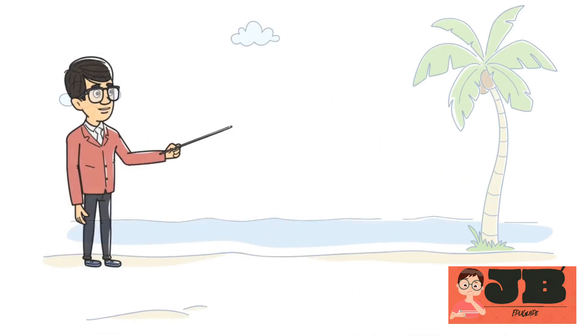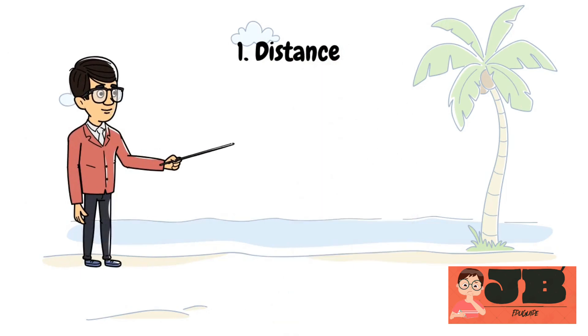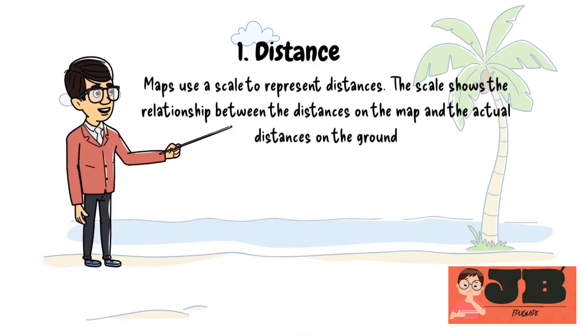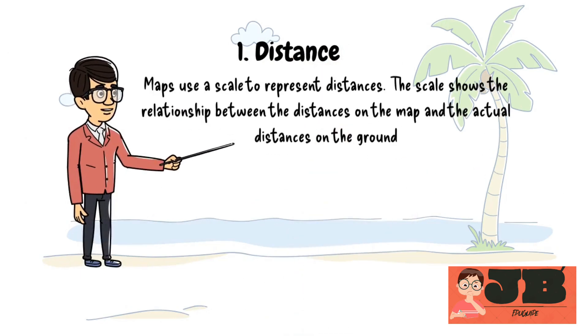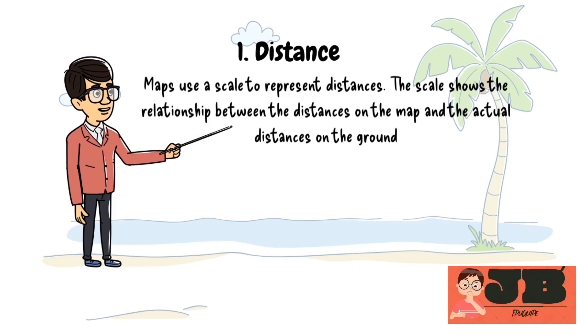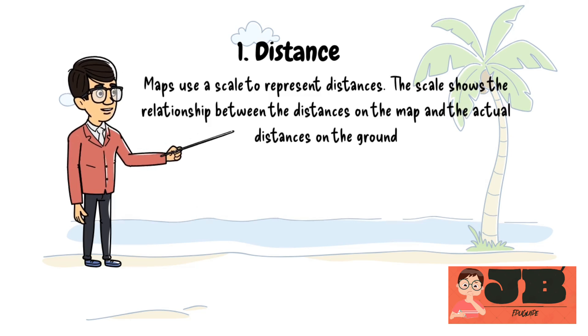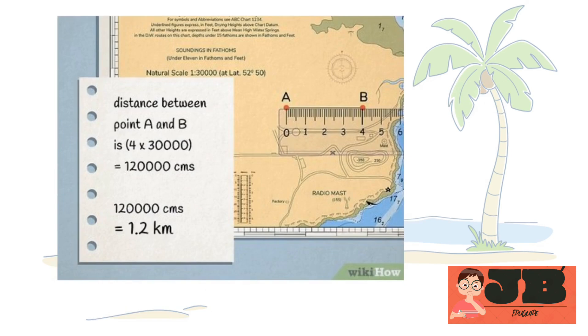Let's understand the first component of map: distance. Maps use a scale to represent distances. The scale shows the relationship between the distances on the map and the actual distances on the ground. For example, a scale might show that 1 cm on the map equals 10 km in reality.